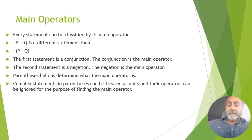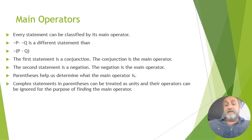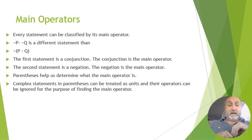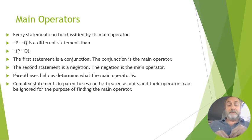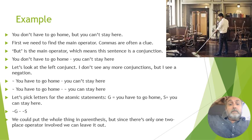Every compound statement has exactly one main operator. For example, 'not P and not Q' is a conjunction — the main operator is 'and.' But 'not (P and Q)' is a negation — the main operator is 'not,' and the conjunction is in parentheses showing it's not the main operator. Parentheses help us determine the main operator; it's always the one floating free outside the parentheses.